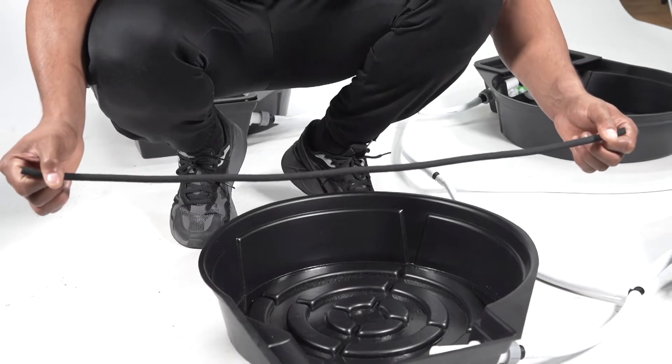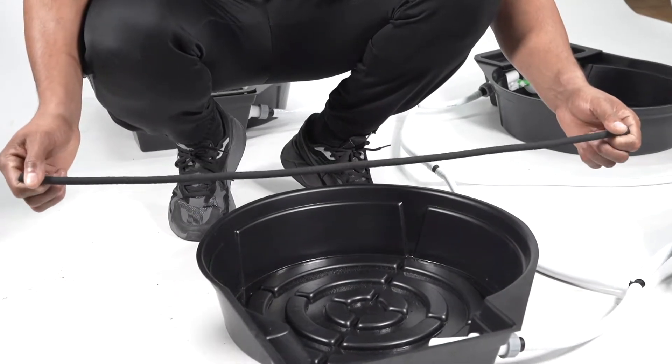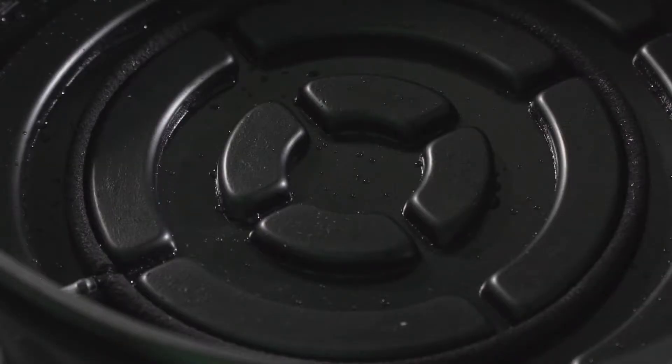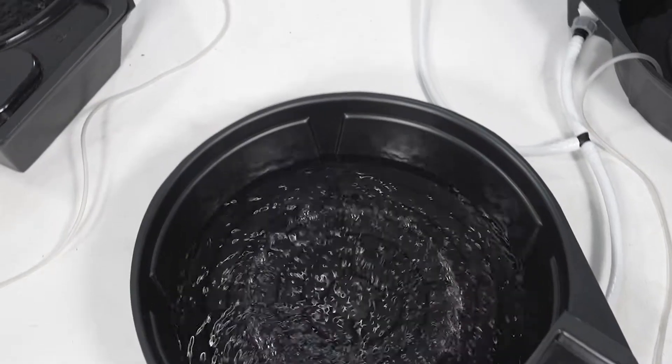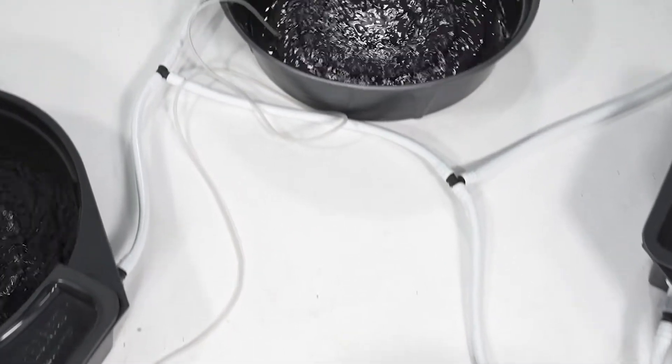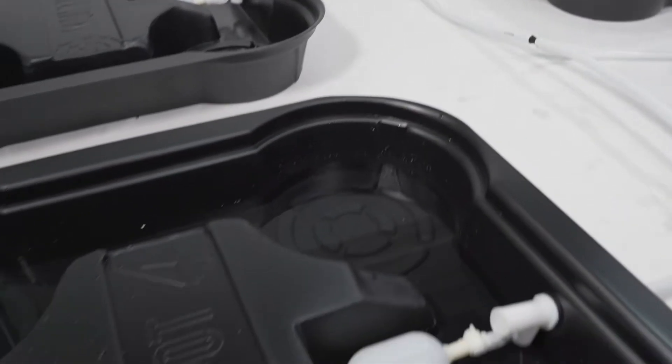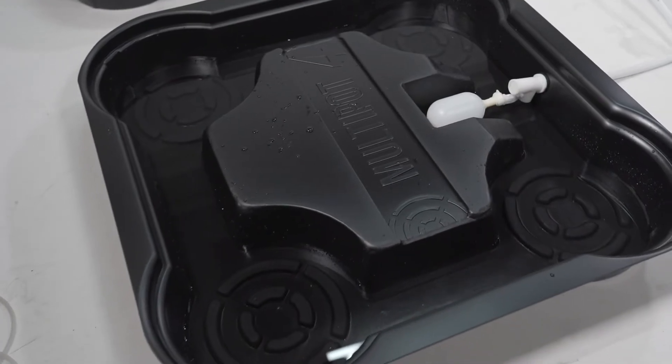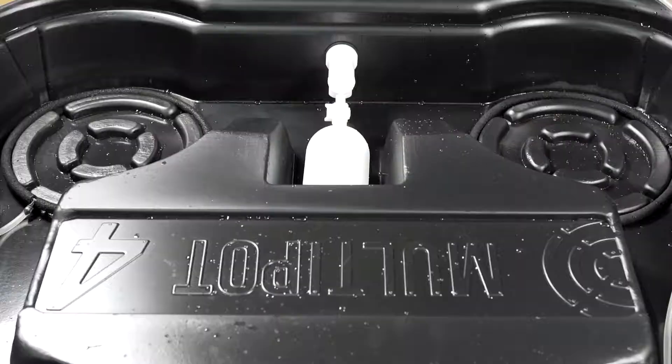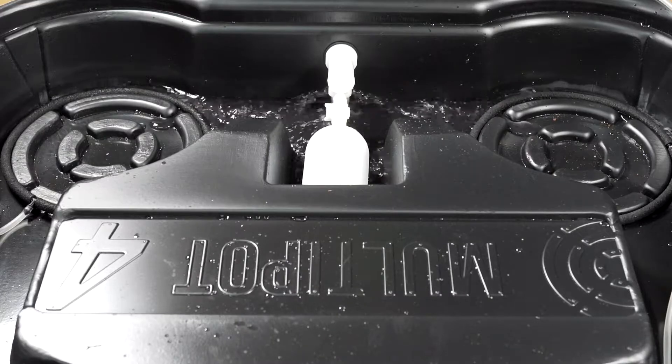We recommend purchasing one meter of porous pipe per pot and then trimming to the correct length after. Porous pipe or air curtains are used to oxygenate water to keep roots healthy, prevent water from going stagnant and thoroughly mix nutrients. All Megapot systems are compatible with porous pipe air rings and air curtains.